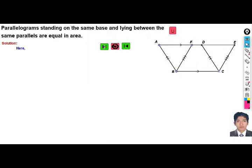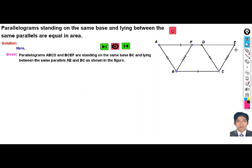Solution here: Parallelograms ABCD and BCEF are standing on the same base BC. BC is the base and lying between the same parallel lines AE and BC. Both are parallel to each other.